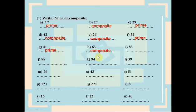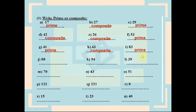63 is composite. It is divisible by 3, divisible by 9, and divisible by 7, so it has more than two factors. 83 is a prime number because it is not divisible by any number except itself and 1, so it has only two factors.